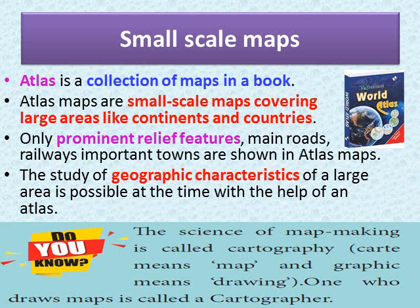The next type of small scale map is the Atlas. Atlas is a collection of maps in a book. Atlas maps are small scale maps covering large areas like continents and countries. Only prominent relief features, main roads and railways, and important towns are shown in Atlas maps. The study of geographic characteristics of a large area is possible with the help of an Atlas.